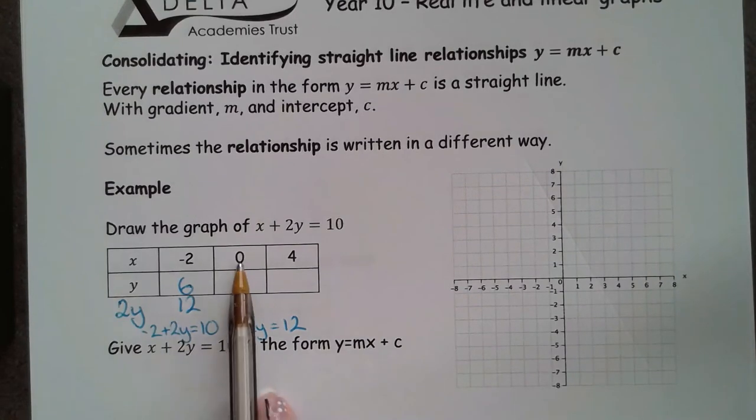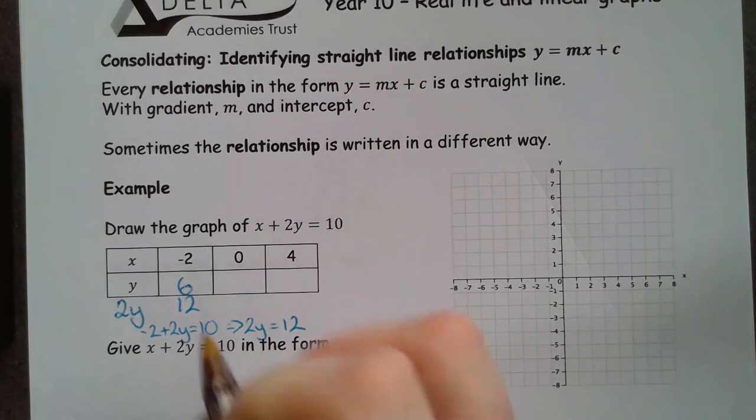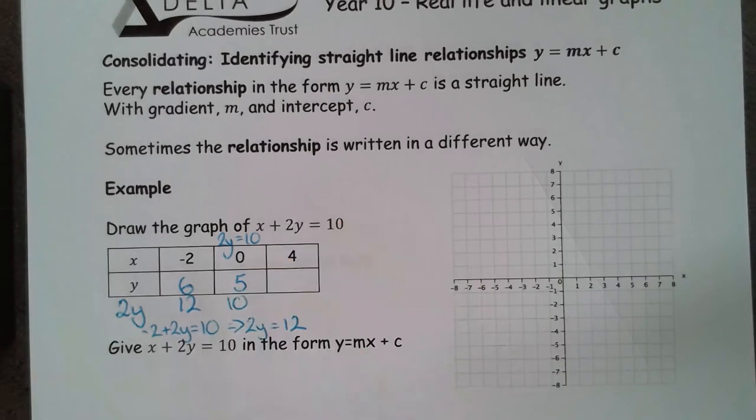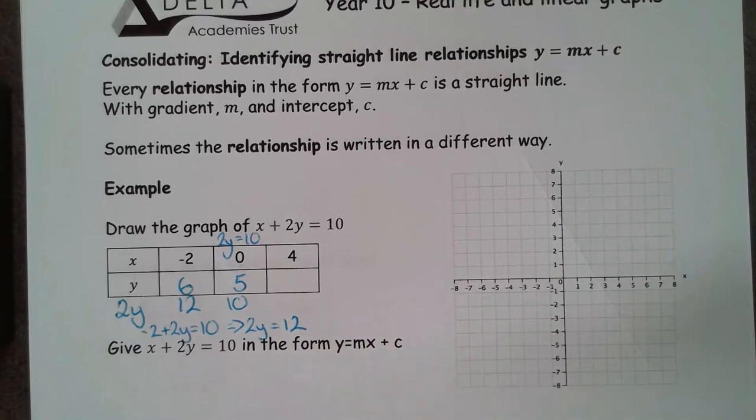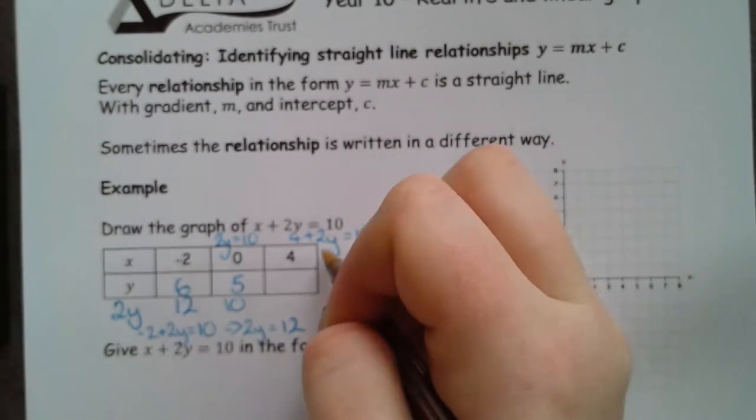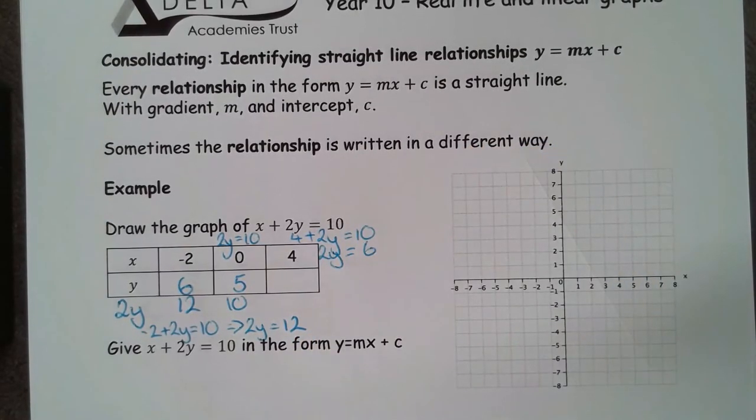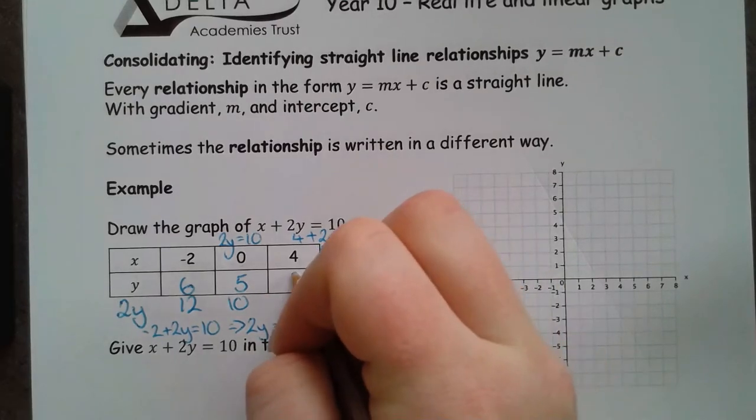If I substitute in this 0, I get 0 plus 2y is 10. So, 2y equals 10. And then that therefore means that we must get a 5 here. And then if I substitute in 4 for x, then I end up with 4 plus 2y is equal to 10. Or 2y is equal to 6 if I take 4 from both sides. And then that means that y must be 3.